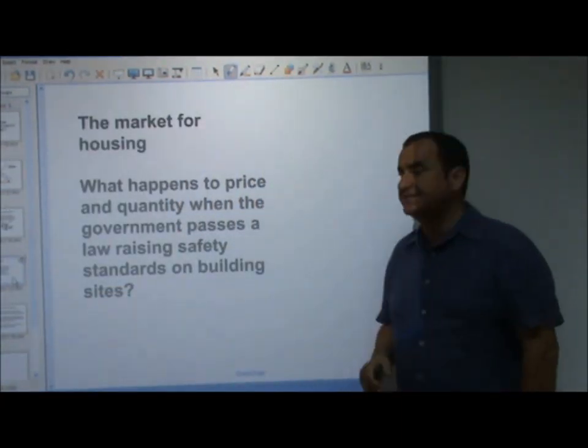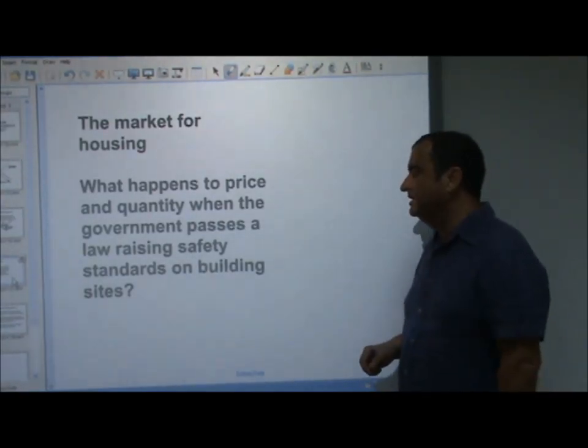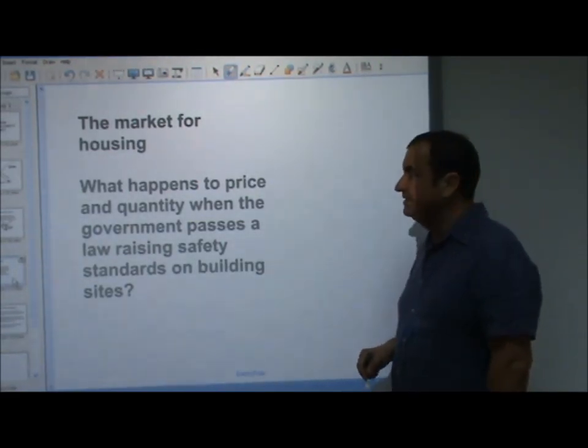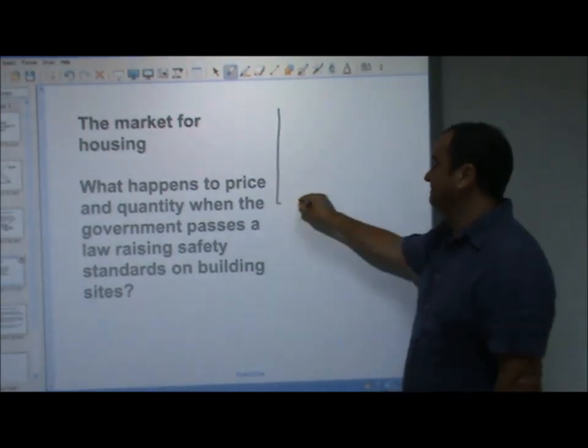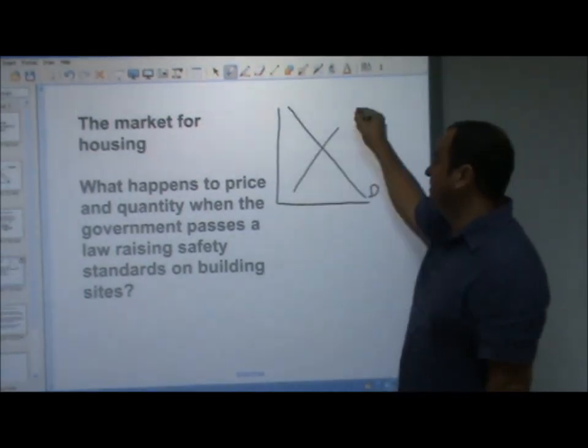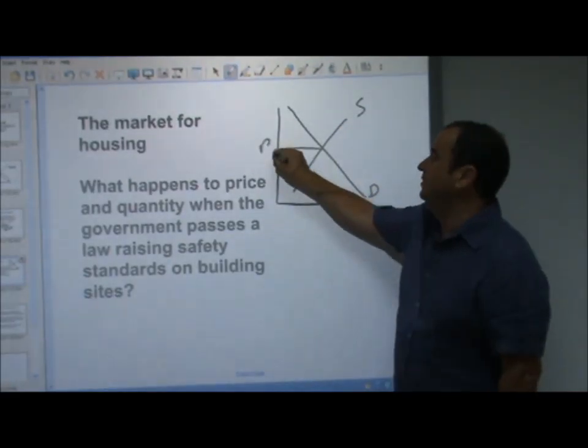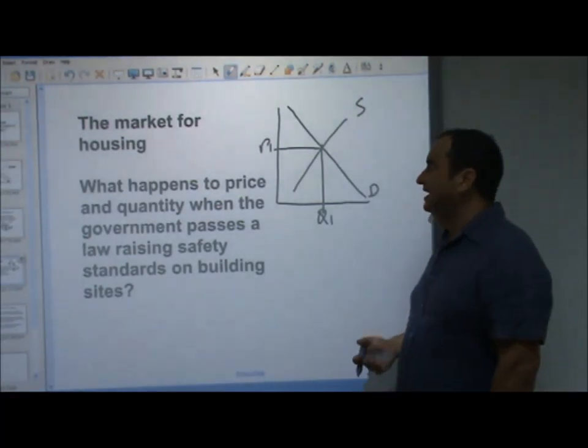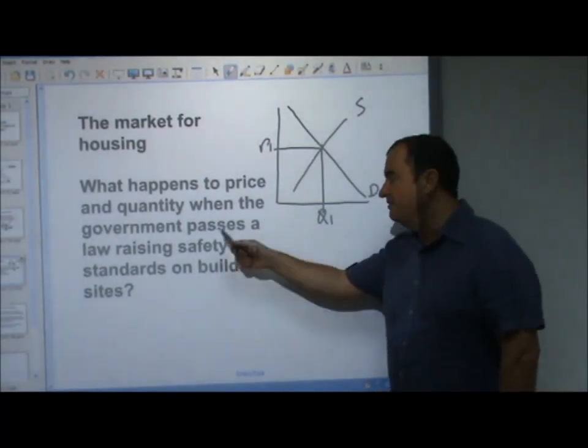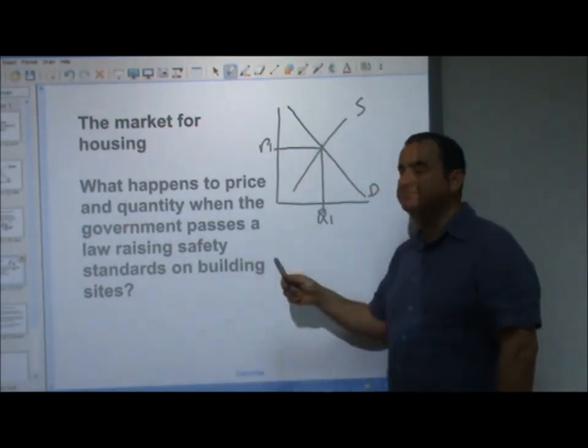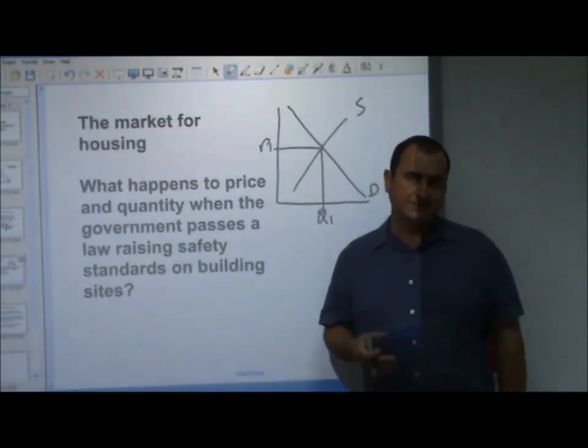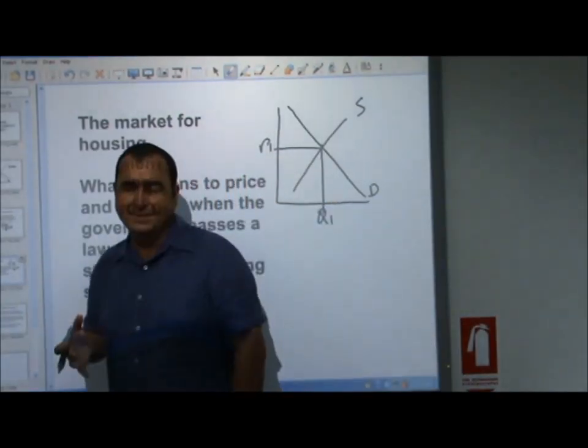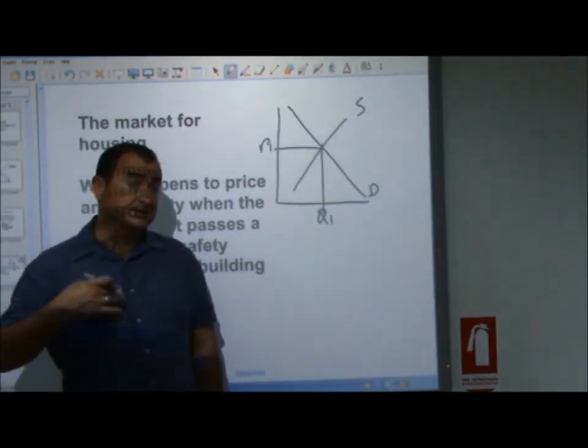The market for housing. What happens to price and quantity when the government passes a law raising safety standards on building sites? We start with a single equilibrium point, P1. P1, Q1 are the equilibrium price and quantity. Is that going to affect demand or supply?